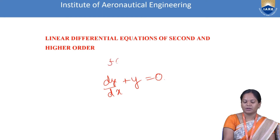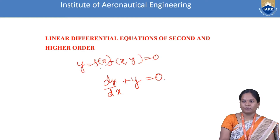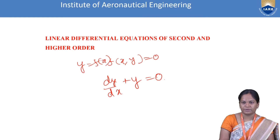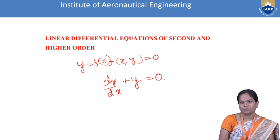First of all, we have a function f(x, y) = 0. Here y = f(x) is a function, where x is the independent variable and y is the dependent variable — y depends upon x. So we write the differential equation of the form dy/dx + y = 0. This is the differential equation.